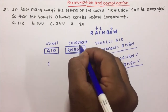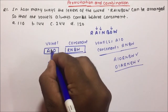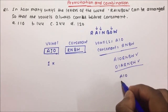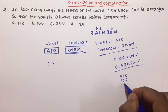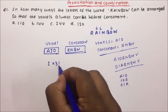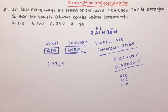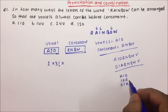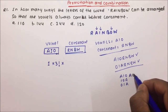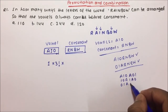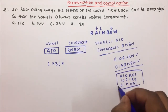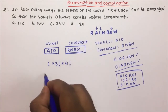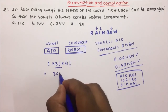There is only one way vowels will come on this side and consonants on this side, but the vowels will get arranged among themselves. The word can start with A, or I, or O — so among themselves they will get arranged in 3 factorial ways. For example: A-O-I, I-A-O, O-A-I — that is six ways. So three factorial equals 6.